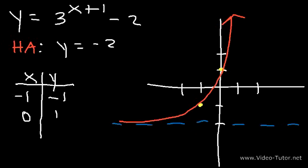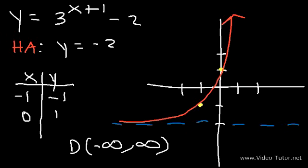Now what are the domain and range of the function? As before, the domain is all real numbers: negative infinity to infinity. For the range, the lowest y value begins at the horizontal asymptote, negative 2, and the function goes up towards positive infinity. So the range is negative 2 to infinity, not including negative 2.